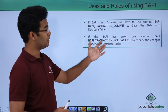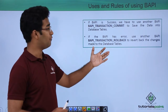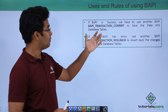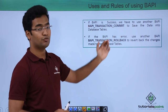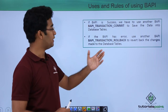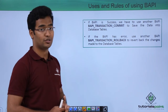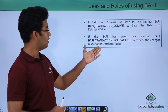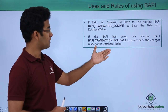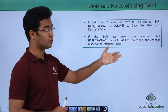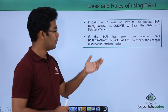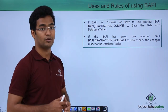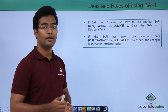Here are 2 other BAPIs that we have to use: BAPI transaction commit, which is used to save the data into the database table, and BAPI transaction rollback, which is used to revert back the changes made to the database table.